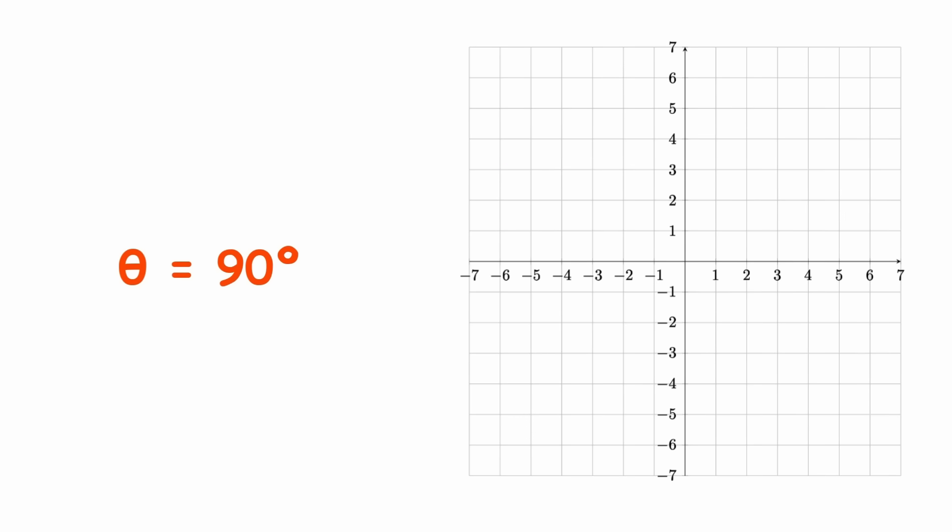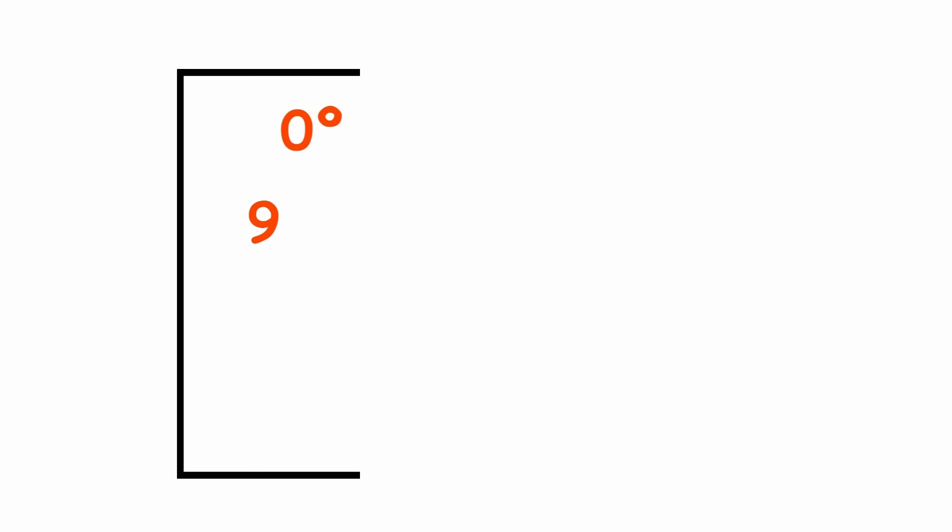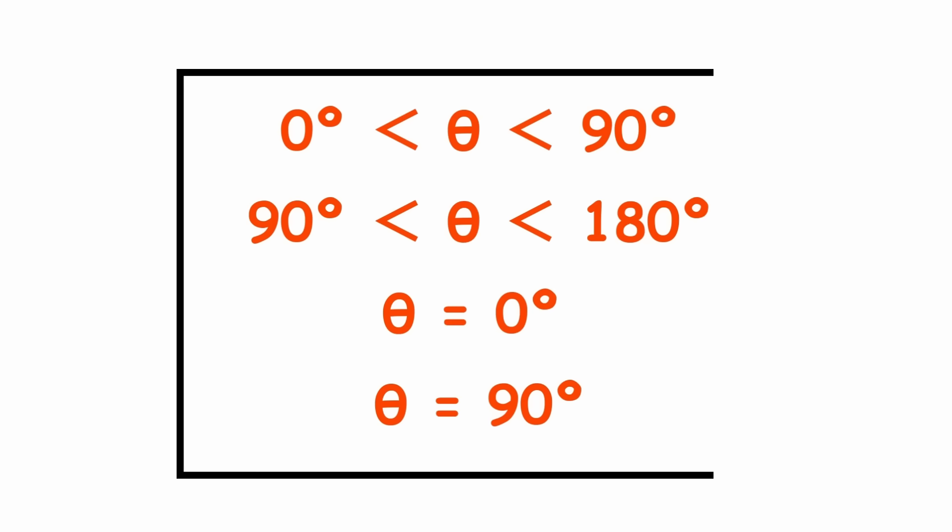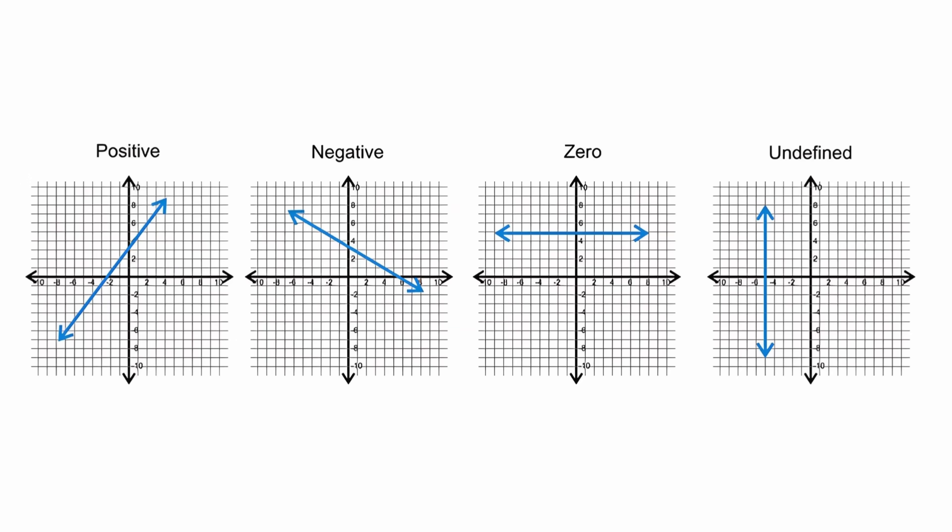If theta is 90 degrees, the slope is undefined, the line is vertical. This relationship is useful in trigonometry and analytical geometry to determine the direction of a line from its slope.